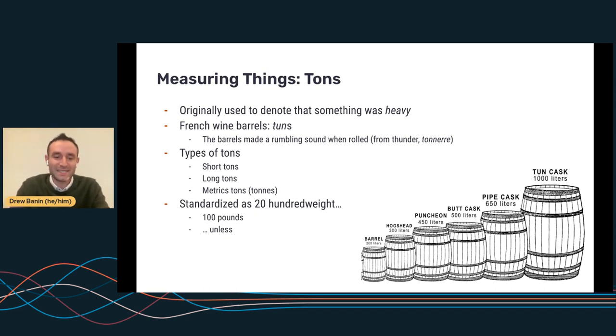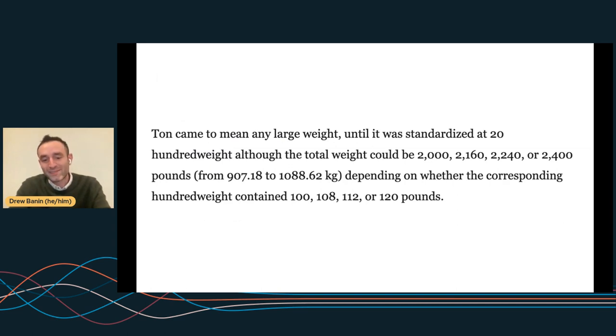So finally, we get to some standardization. And we say that the ton is going to be standardized as 20, 100 weight. And the astute among you might guess that 100 weight is 100 pounds. And you'd be right. Except 100 weight could be 108, or 112, or 120 pounds, depending on who exactly you asked.